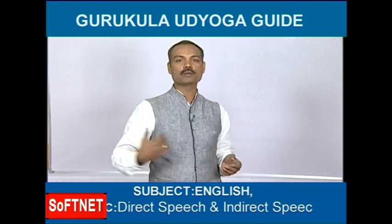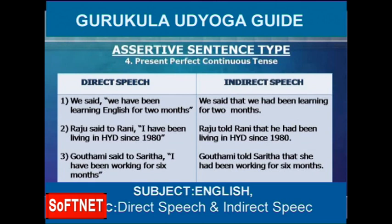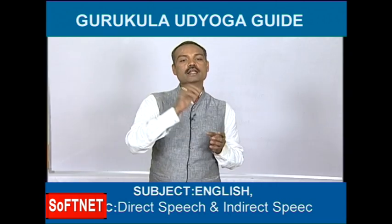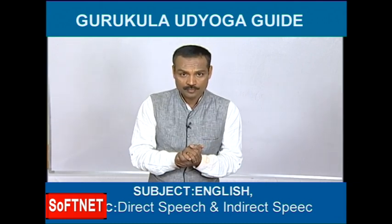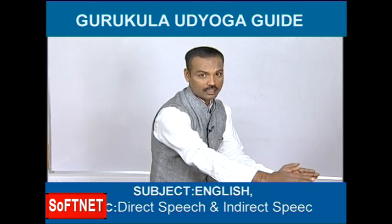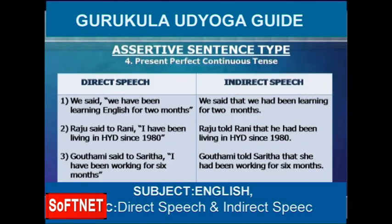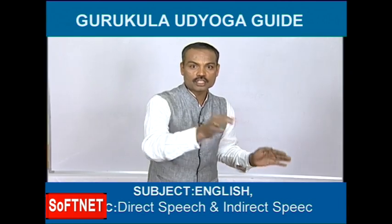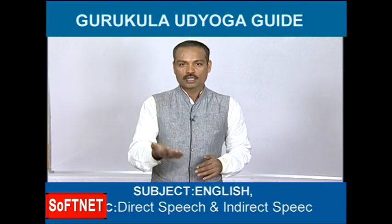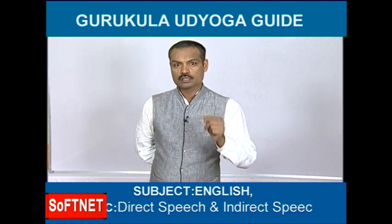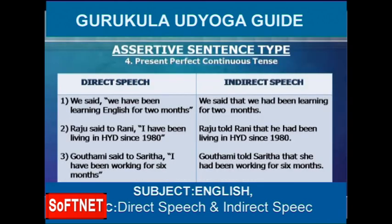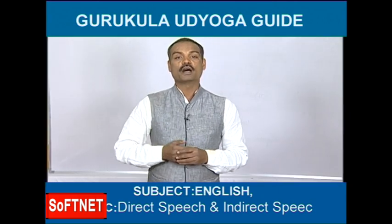Second example: 'Raju said to Rani, I have been living in Hyderabad since 1980.' Raju and Rani are talking, you hear this, and then report it. 'Said to' becomes 'told'. 'I' (Raju) becomes 'he'. Present perfect continuous 'have been living' changes to past perfect continuous 'had been living'. Answer: 'Raju told Rani that he had been living in Hyderabad since 1980.'